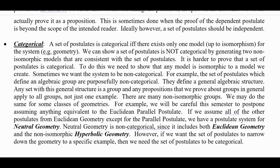This semester we will postpone assuming anything equivalent to the Euclidean parallel postulate, which turns out to be independent of the other postulates. If we assume all other postulates of Euclidean geometry except the parallel postulate, we have a postulate system for what we call neutral geometry. Neutral geometry is non-categorical — it includes both Euclidean geometry and the non-isomorphic hyperbolic geometry. However, if we want the postulates to narrow things down to a specific geometry, we need the set of postulates to be categorical.